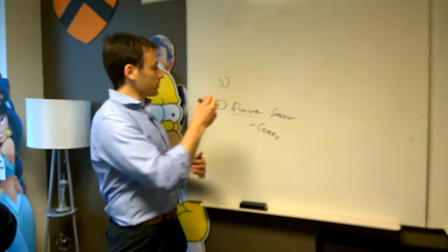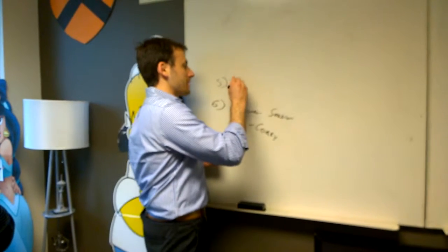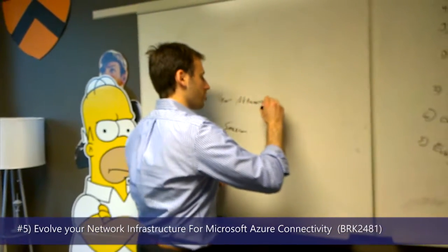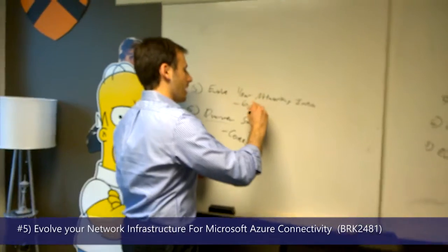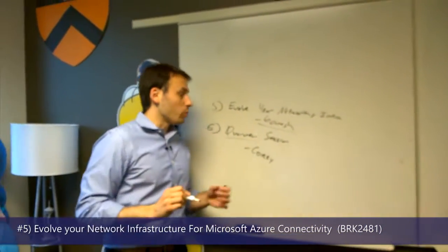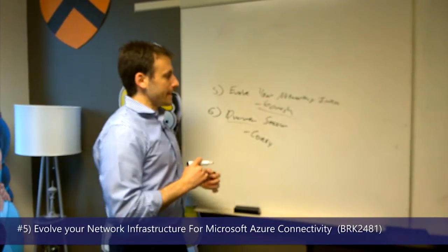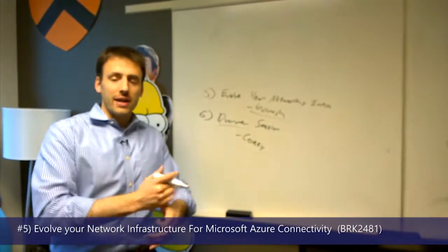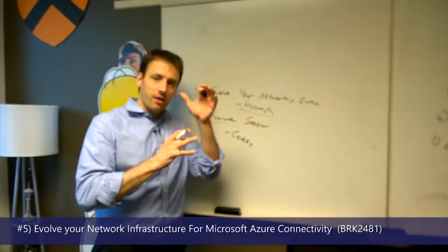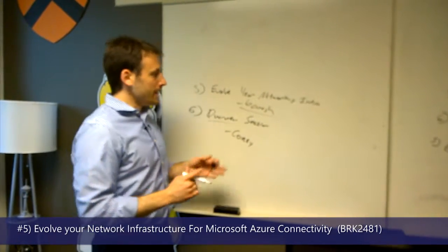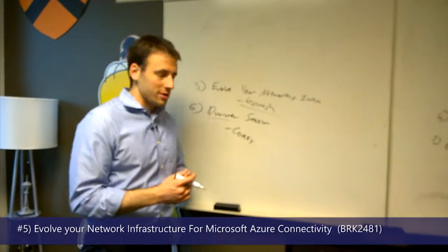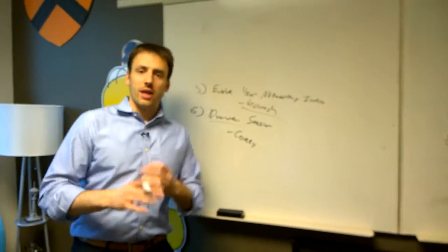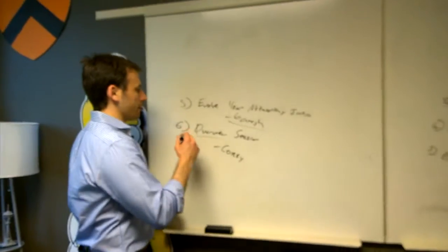Moving to five, one of the great sessions with a huge amount of announcements, is on networking — called 'Evolve Your Networking Infrastructure,' delivered by a colleague named Ganesh. It covers user-defined routes, which let you define the routing between your virtual machines in Azure, enabling things like intrusion detection solutions. It also makes ExpressRoute — the fast way to connect back to your on-premise deployment — work really well. Highly recommend this one.